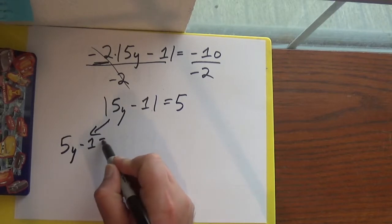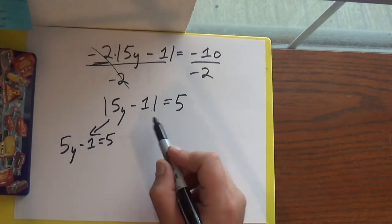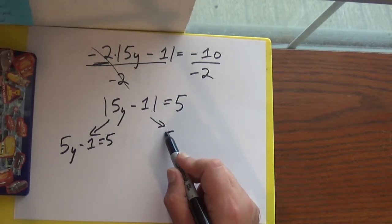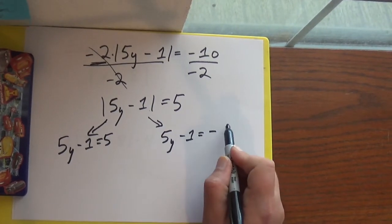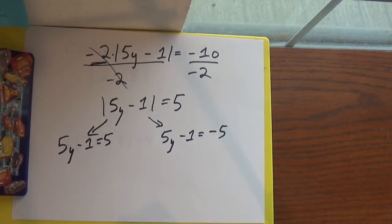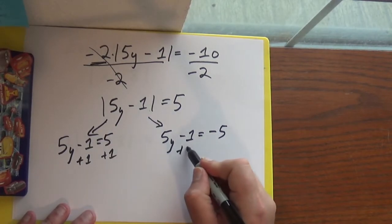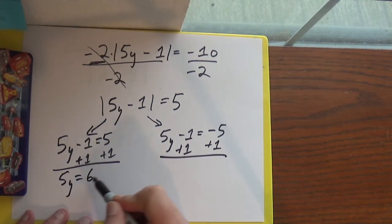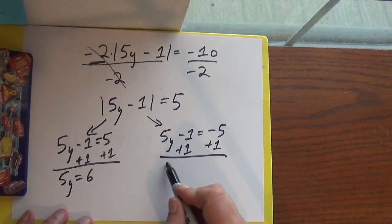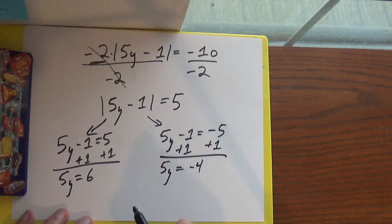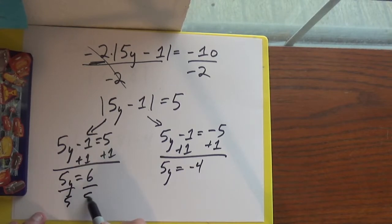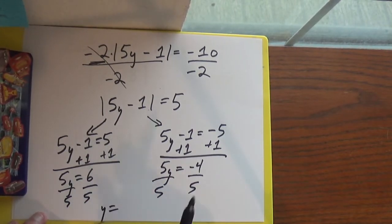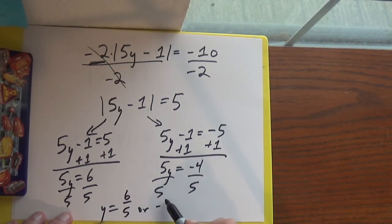So I've got 5y minus 1. The 'does nothing' case: I'll just carry the 5 down. The 'does something' case: I'll change the sign. Now I need to add 1 to both sides of each equation. These cancel, I get 5y equals 6. And over here I get 5y equals negative 4. Now I need to divide everything by 5. So y equals either 6 fifths or negative 4 fifths — they're fractions; they didn't divide cleanly.